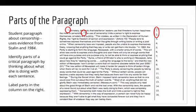This is a student paragraph about censorship written by my wonderful student, Emma. It uses evidence from Stalin and 1984. What I'd like you to do is to read through her paragraph and see if you can identify the parts of her paragraph by thinking about what she's doing with each sentence.